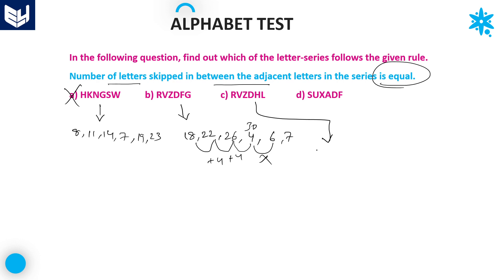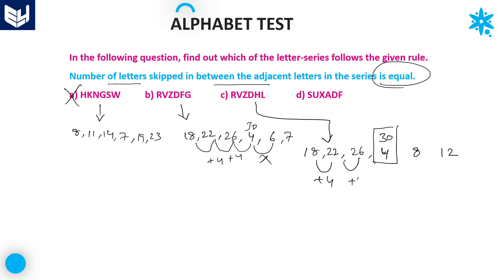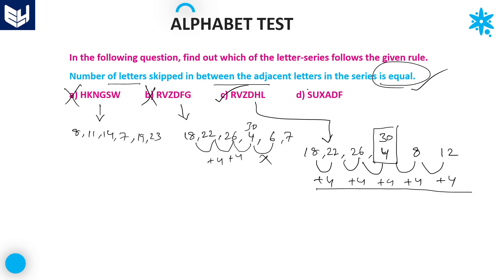Check the third option. That is 18, 22, 26. After that, D is 4 but can also be written as 30. After that 8, and then 12. The gap here is plus 4, here plus 4, this is also plus 4, the next one is also plus 4, and finally this one is also plus 4. Gaps are equal for all adjacent letters, so the number of letters skipped between adjacent letters is also equal. Option C satisfies the given rule — option C is the right answer.